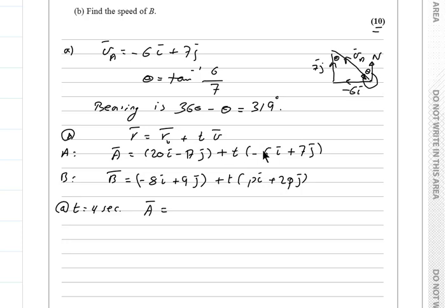At T equals 4 seconds, we will do the following. The new position of A: T will be 4, which will expand this bracket, and then we collect i together and j together. 4 times -6 is -24i plus 20i will be -4i. Also here, T which is 4, 4 times 7 is 28j minus 17j, it will be +11j. Also for B vector, we have T is 4 now, 4 times P will be 4P, 4P - 8 all times i. And then plus 4 times 2P is 8P plus 9j, 8P + 9j.